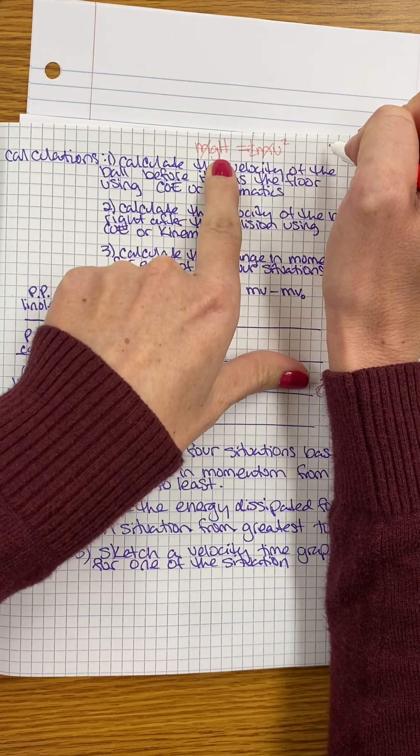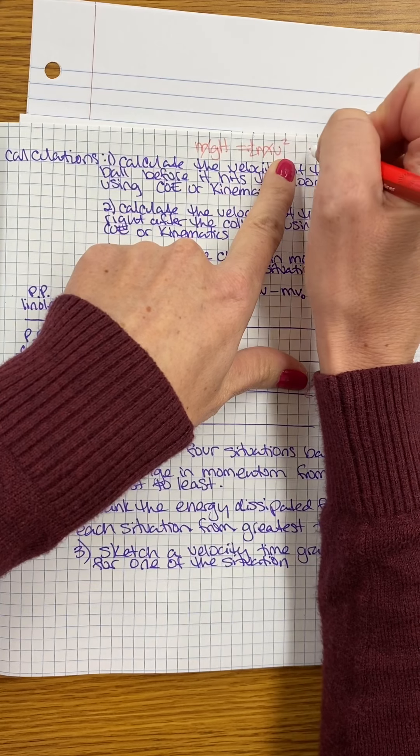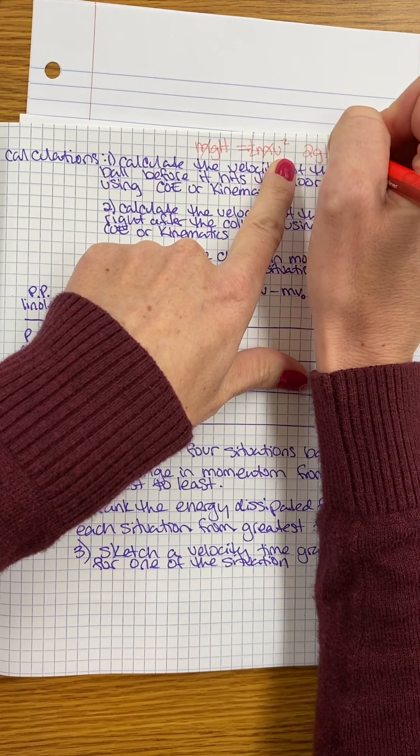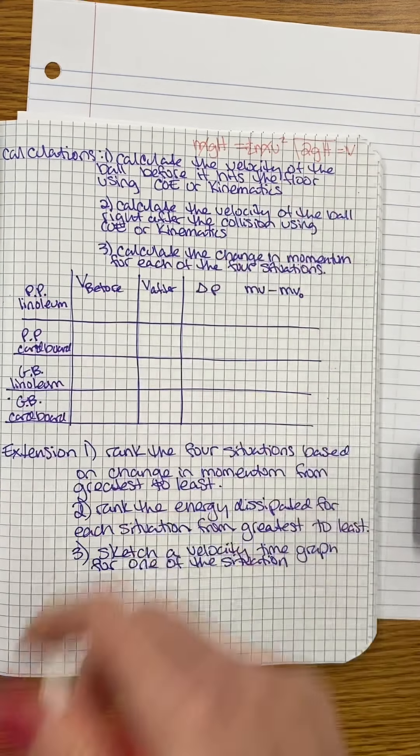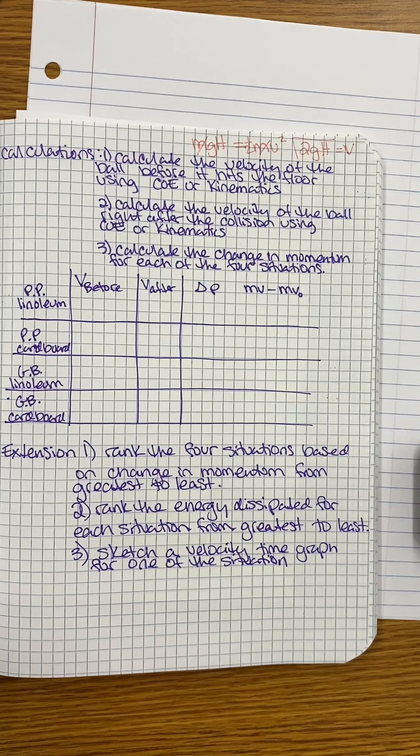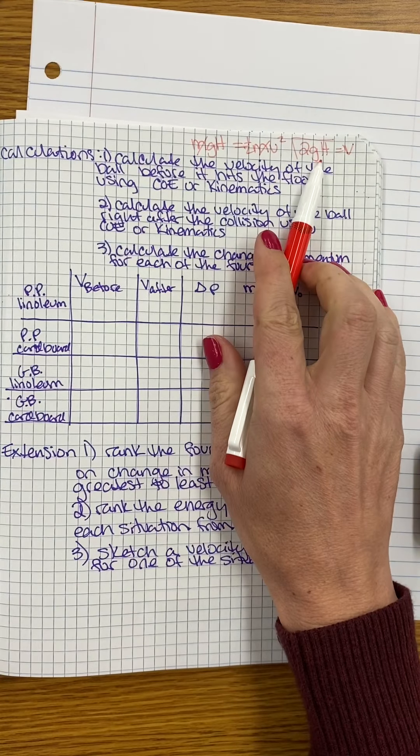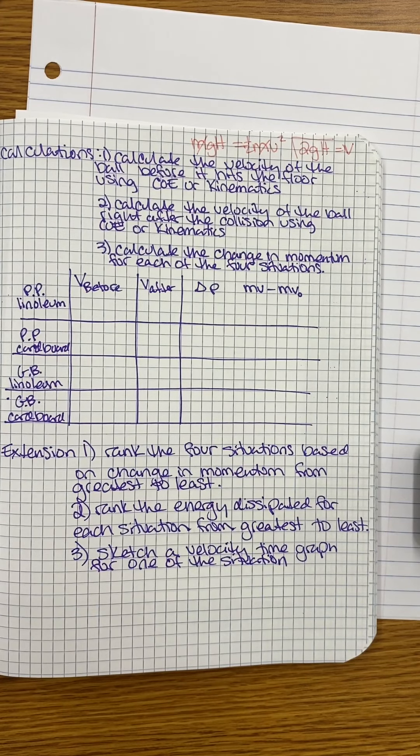And GH will be equal to one-half my V squared. So when I rearrange all the way, it's going to be the square root of 2GH is equal to my velocity. This is also true for the velocity post-collision, right? But this big H will be little h to give me my velocity post-collision.